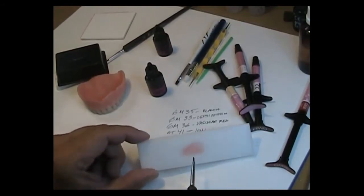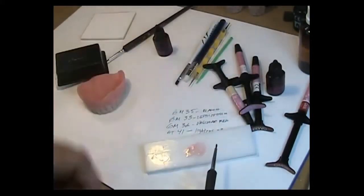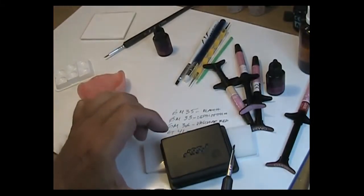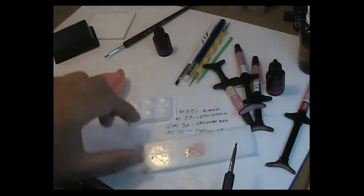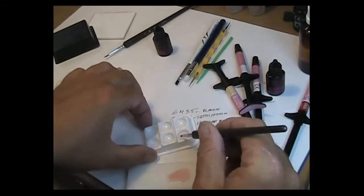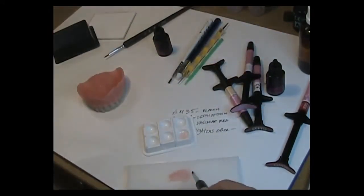So composite primer, four tubes of material, a cover so that you can cover the material so it doesn't precure, some sort of a well to clean my brush. You're going to need instruments for application, brushes, little plastic tipped instruments, anything to pick the material up and place it where you need it to be, and then some sort of a blending tool.